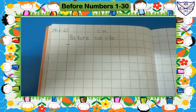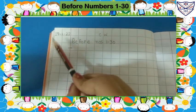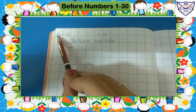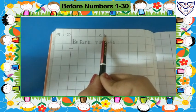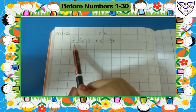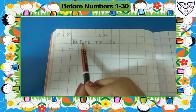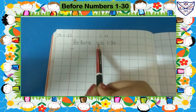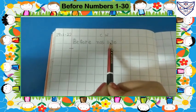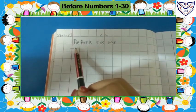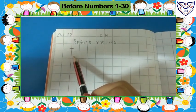Today we will write before numbers 1 to 30 in a square line notebook. Write here today's date, that is 29-1-22. Write here classwork. In the next line we will write the heading: before numbers 1 to 30. Now leave one line and we will start from here.